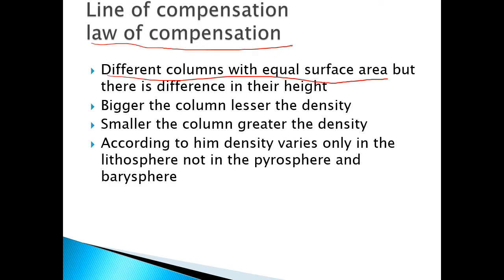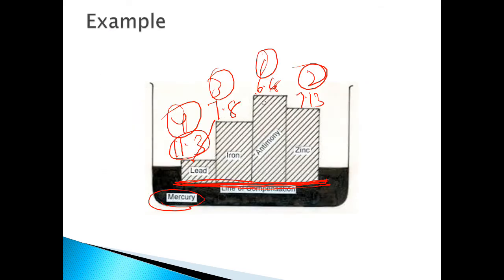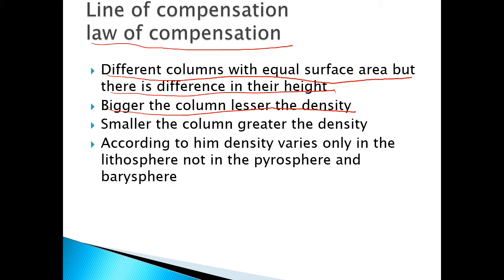Different columns have equal surface area but different heights. Bigger the column, lesser the density. Smaller the column, greater the density. For example, lead with density 11.3 represents a smaller, denser column.